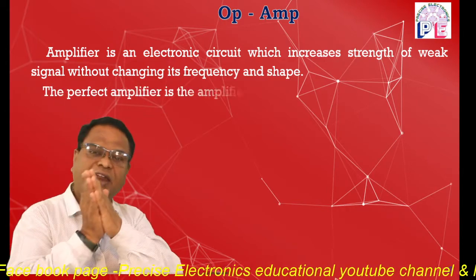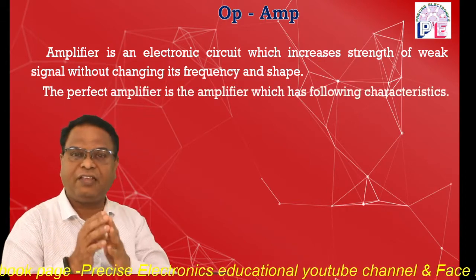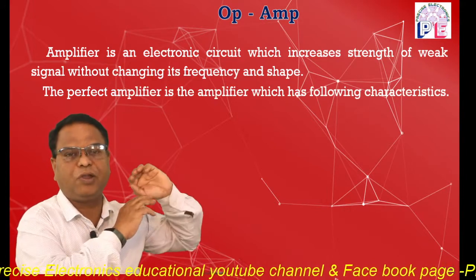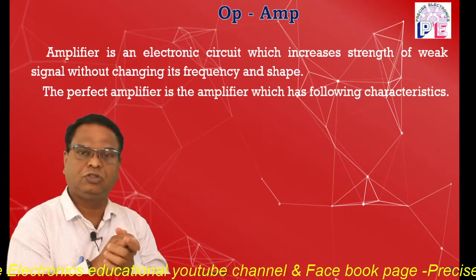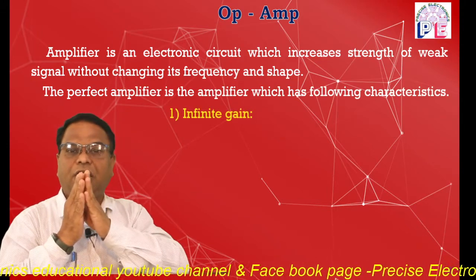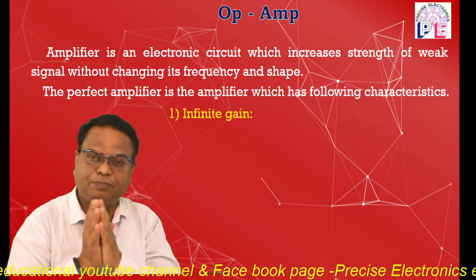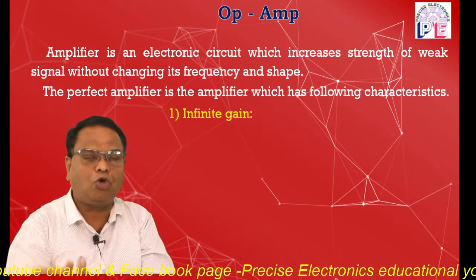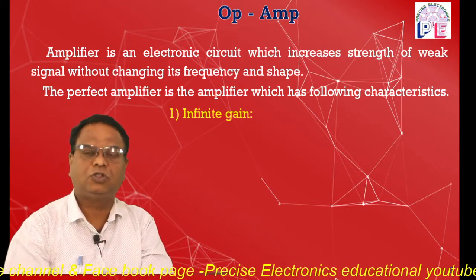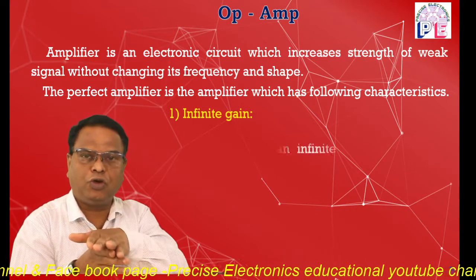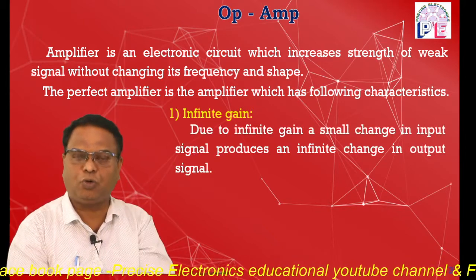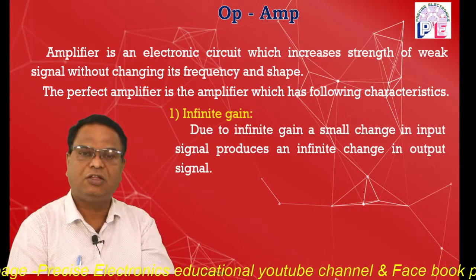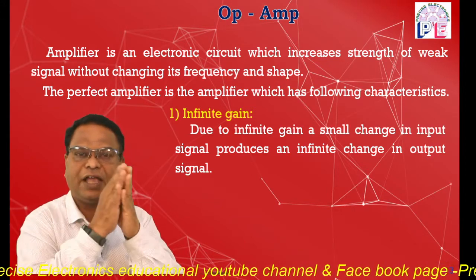The perfect amplifier, or ideal amplifier, has the following characteristics, which are now going to be displayed on your screen. The first characteristic is infinite gain. Gain is the ratio of output to input: A = V₀ / Vᵢ, therefore V₀ = A × Vᵢ.